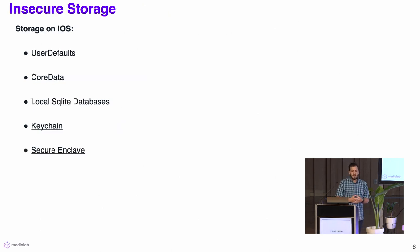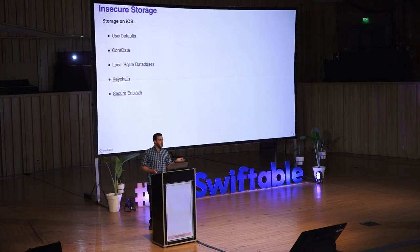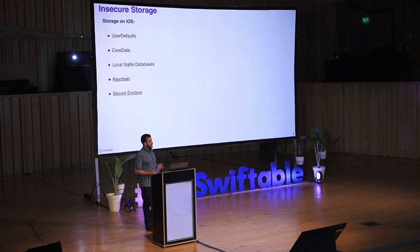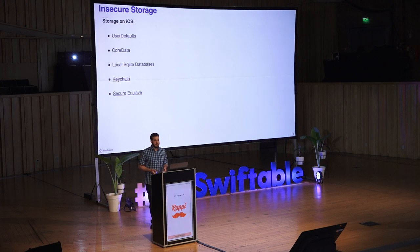The first attack I will present is insecure data storage for storing information on the file system. Most developers probably know we have a variety of storage options on iOS: user defaults, core data, local SQLite databases, keychain, and the secure enclave. These are the ones provided by Apple. There are more, for example real-time database, but I am going to talk just about the ones from Apple.